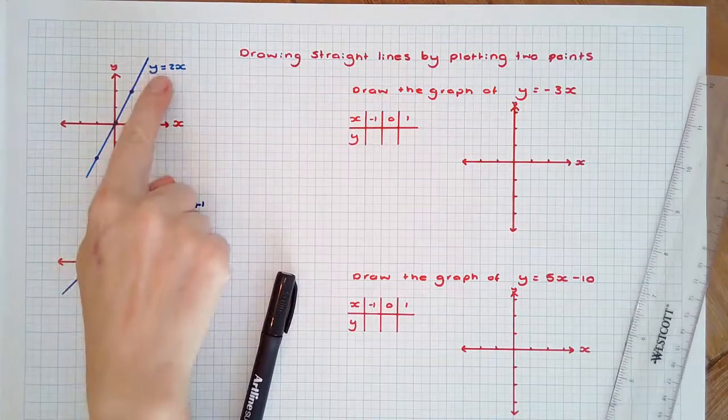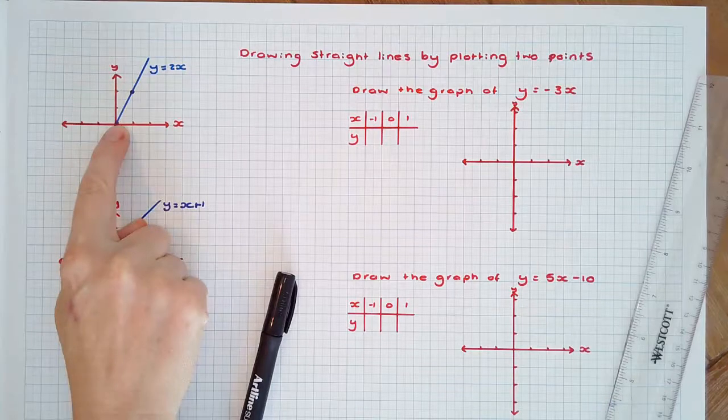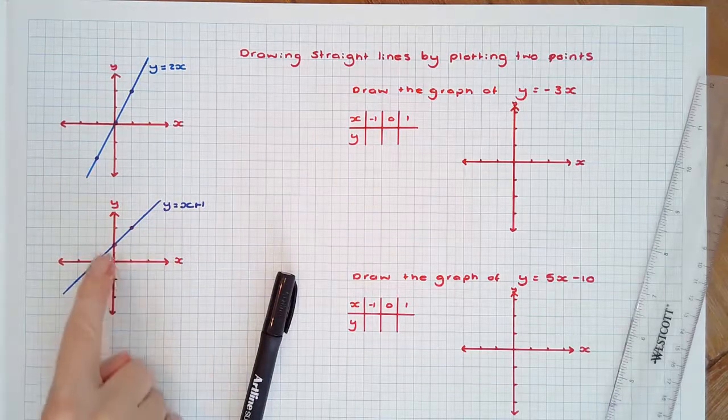The first is y equals 2x and it passes through the origin. The second, y equals x plus 1, does not pass through the origin.